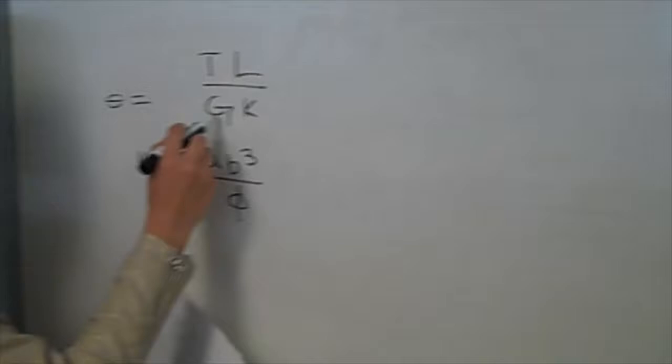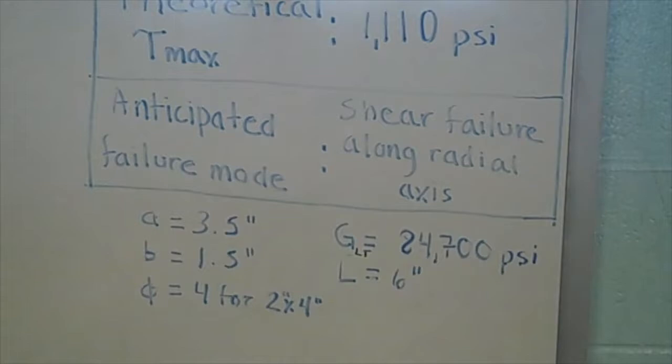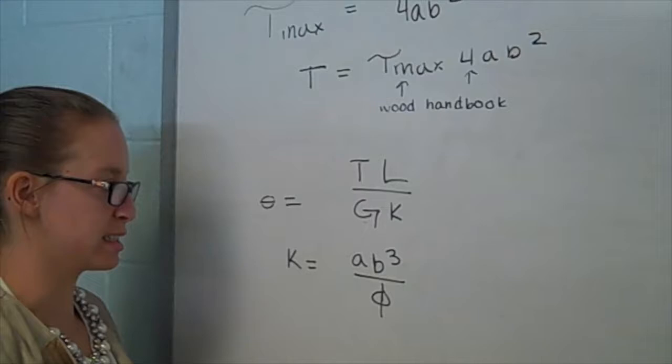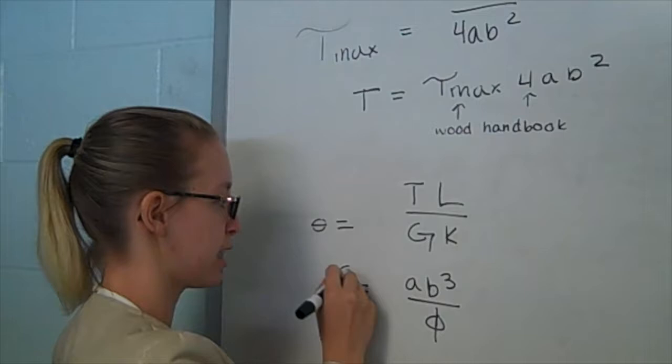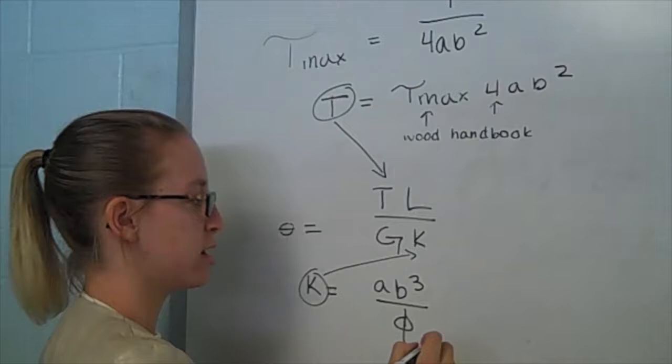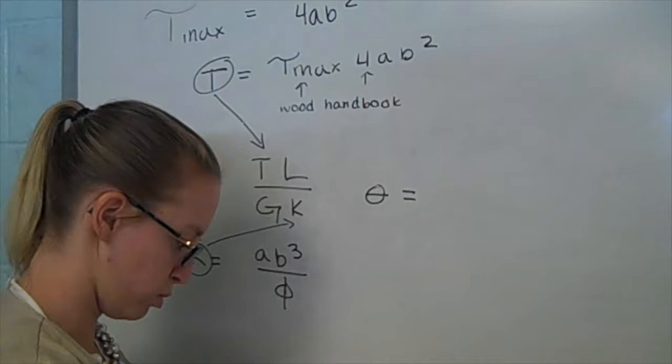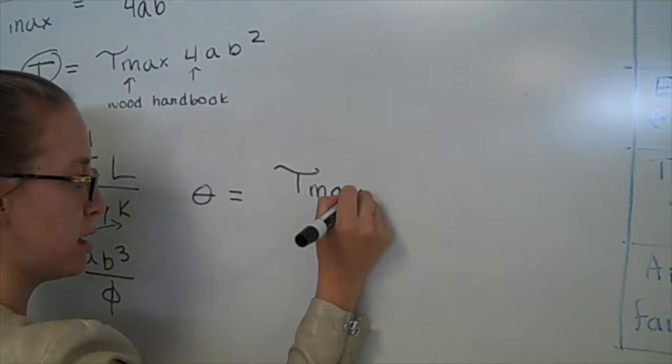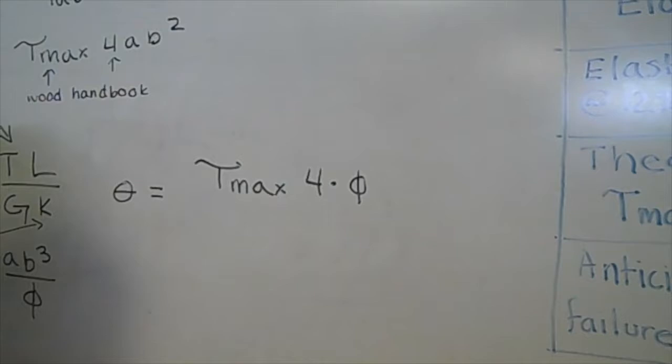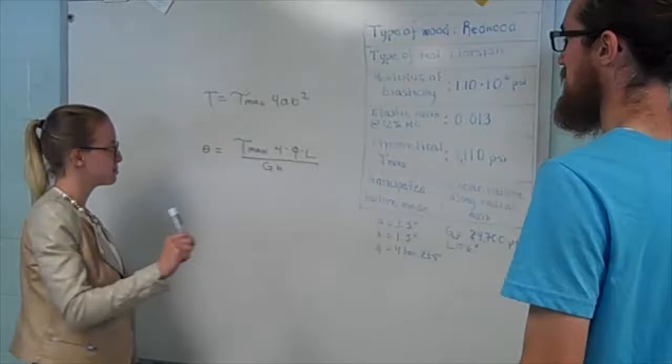The second equation you'll need is for theta, which will help you find how far his arms are going to twist before they fail. Theta equals tL over GK, where K equals ab cubed over beta. Beta is given over here — it's 4 for a 2x4 section of wood. And b, again, are your cross sections. G here is your shear modulus, which is given for the radial direction. And L is your effective length, which is 6 inches. And T is what you solve for up here, which is the torque applied to failure.